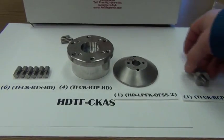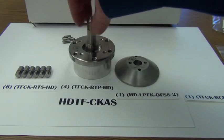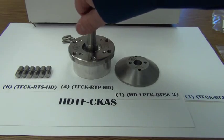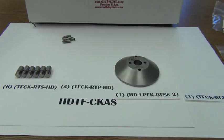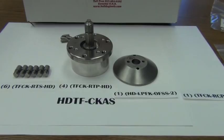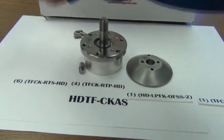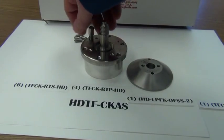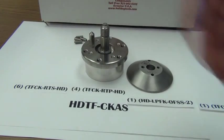Next we will take our TF-CK RC-PHD or heavy-duty center post, quick reference to it, and thread it into the center. Thread it all the way down. And you can take your six TF-CK RTS-HDs and thread those into the attachment plate, top-loading attachment plate.